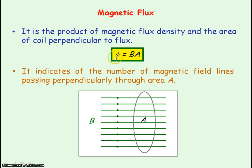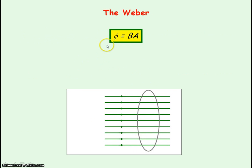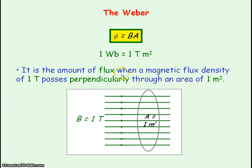The greater the magnetic flux will be shown by more field lines passing through that area A. The unit of magnetic flux is the Weber, and the definition of the Weber comes from the definition of magnetic flux. So one Weber equals the unit of magnetic flux density, which is a Tesla, multiplied by the units of area, which is meters squared. So one Weber is equal to one Tesla meter squared, defined as the amount of flux when you have a magnetic flux density of one Tesla passing perpendicularly through an area of one meter squared.